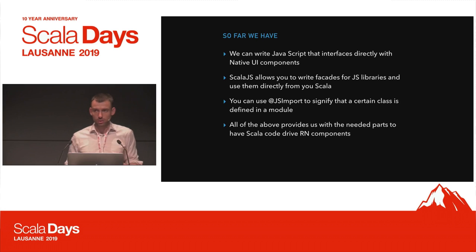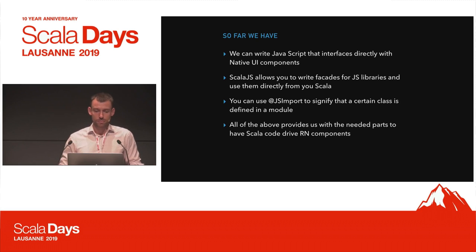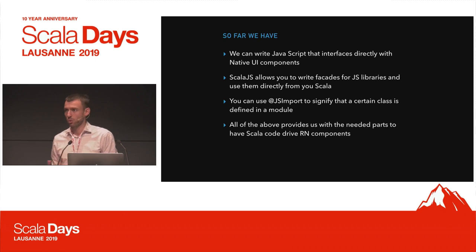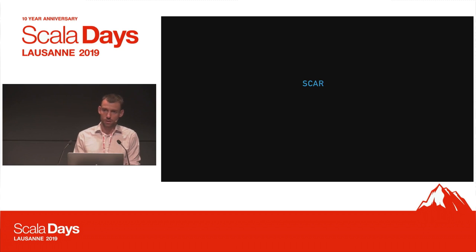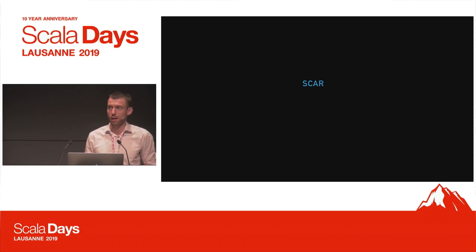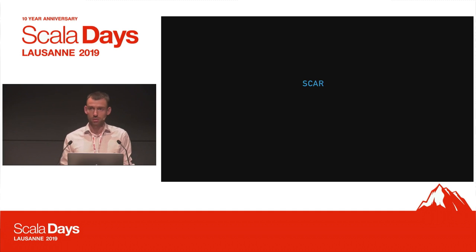Stepping back — what do we have so far? We know we can write JavaScript that interfaces directly with native UI components, and Scala.js allows you to write facades for JS libraries and use them directly from Scala code. This provides the needed parts to write Scala code that calls native components on the underlying device. That's the rationale that led us to creating a framework called SCAR, which we use for our application development.